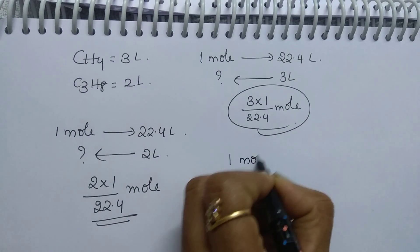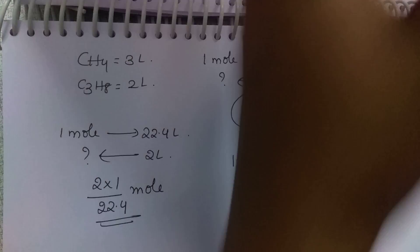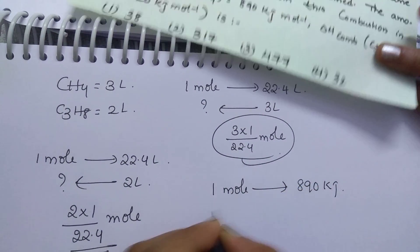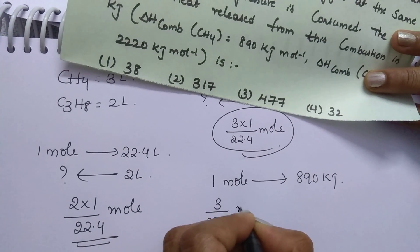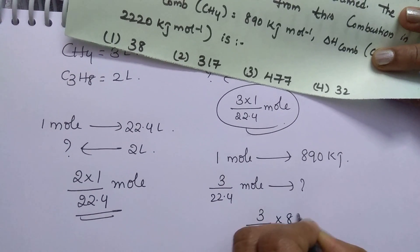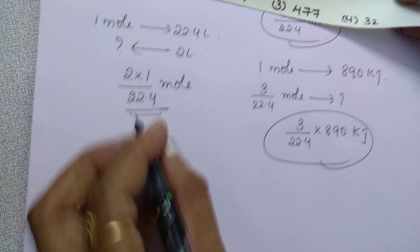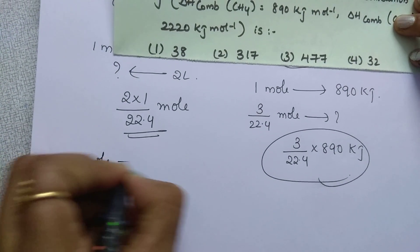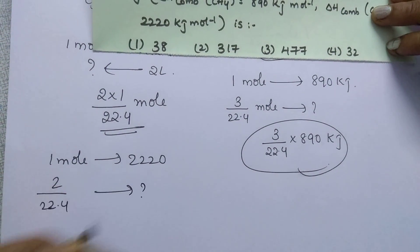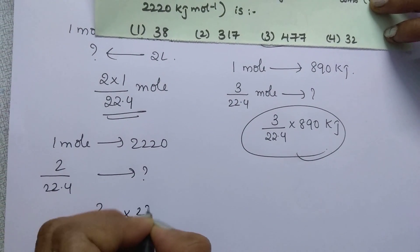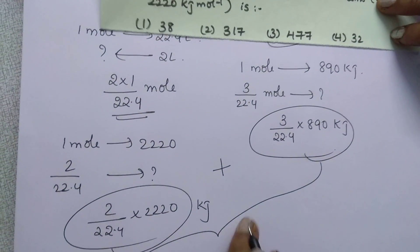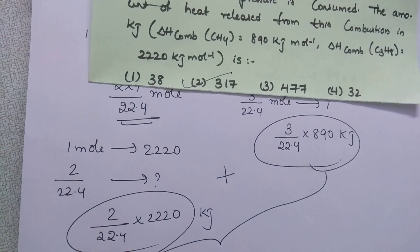The total energy released by the mixture is the sum of both: (3/22.4 × 890) + (2/22.4 × 2220), which gives approximately 300 kilojoules as the final answer.